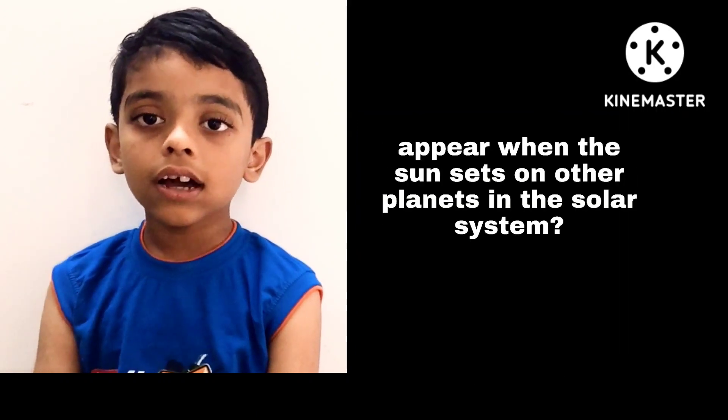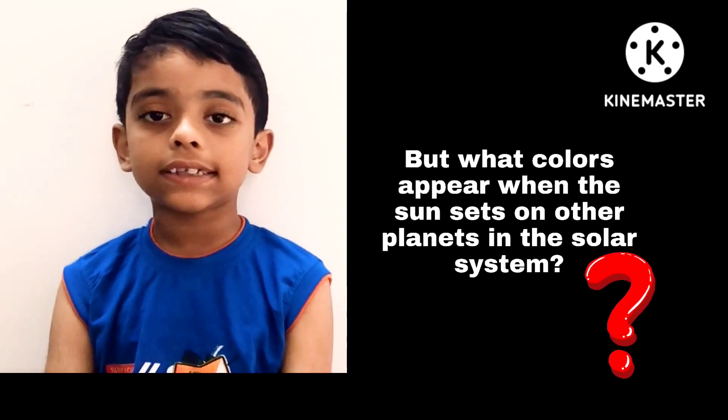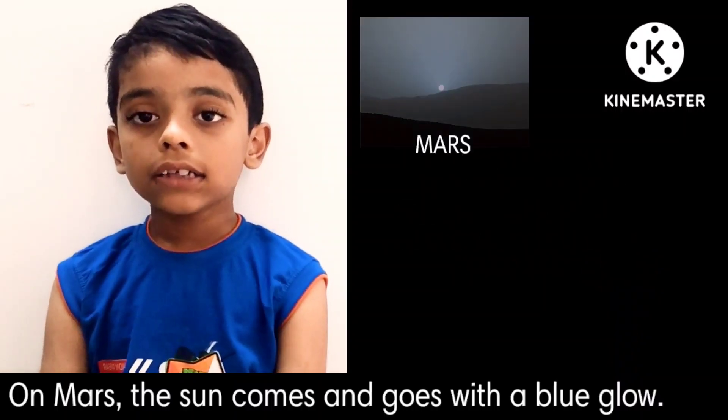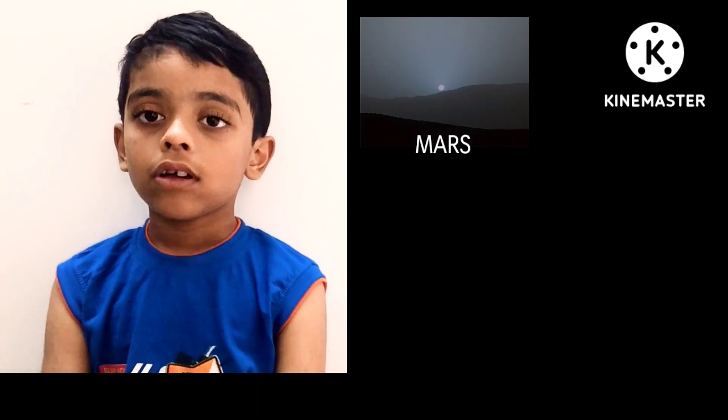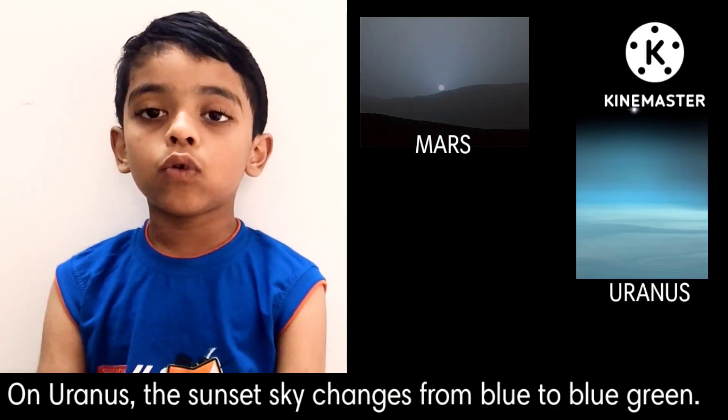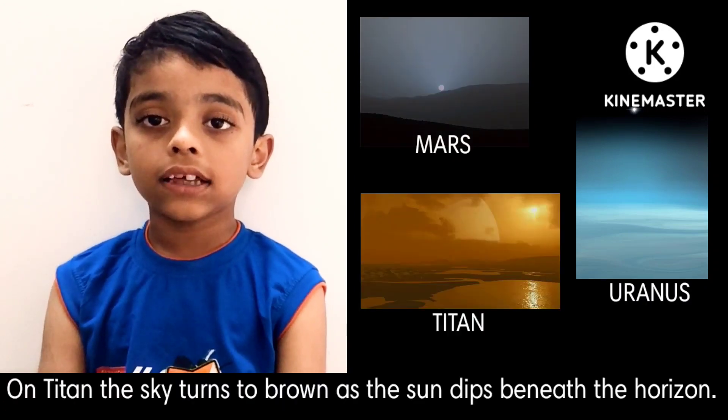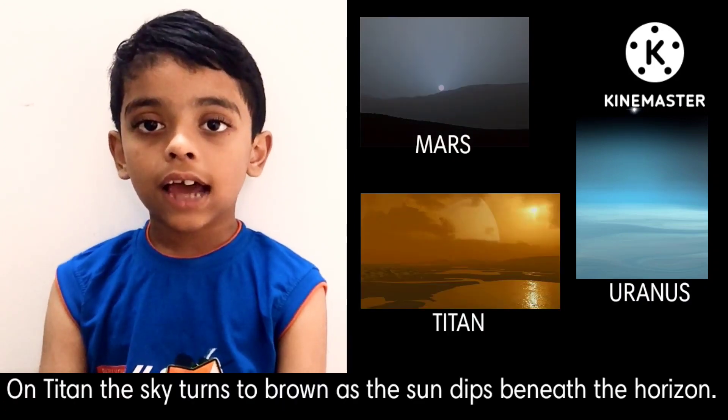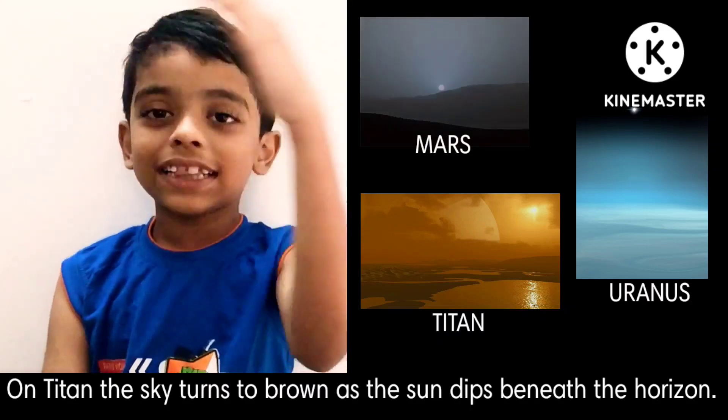But what colors appear when the Sun sets on other planets in the solar system? On Mars, the Sun comes and goes with a blue glow. On Uranus, the Sun sets the sky from blue to blue-green. And on Titan, one of Saturn's moons, the sky turns to brown as the Sun dips beneath the horizon.